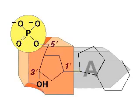The bases are all attached to the one prime carbon of the sugar in a nucleotide. The phosphate group is bound to the 5 prime carbon of a sugar.